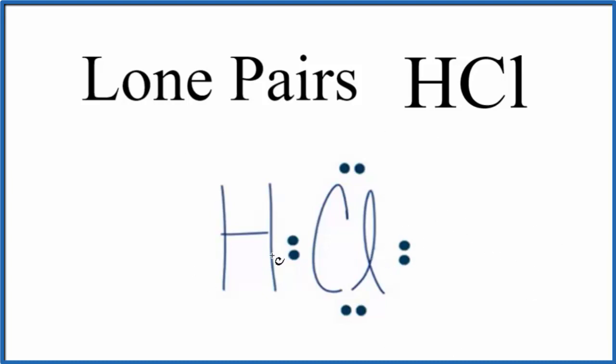So when we look at HCl we see we have one, two, three pairs of electrons that aren't involved in chemical bonds. They're not between atoms. So these are the lone pairs for HCl. We have one, two, three lone pairs for HCl.